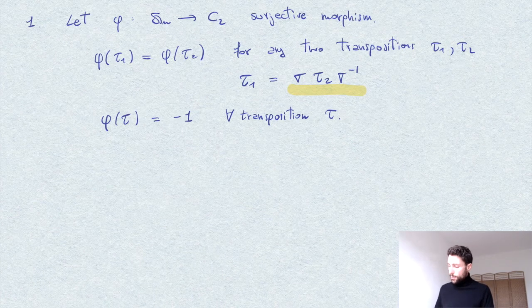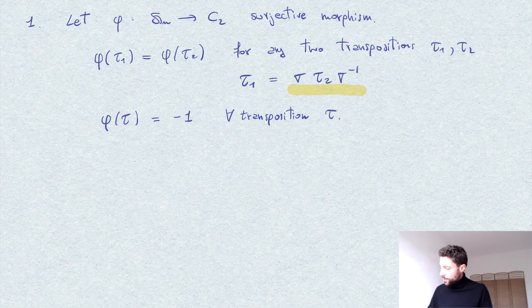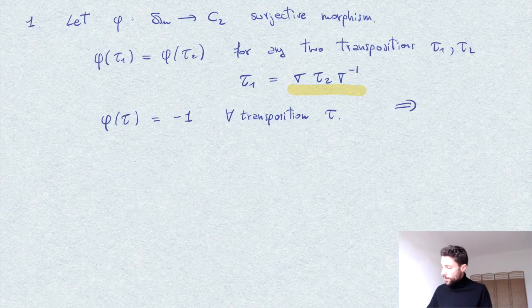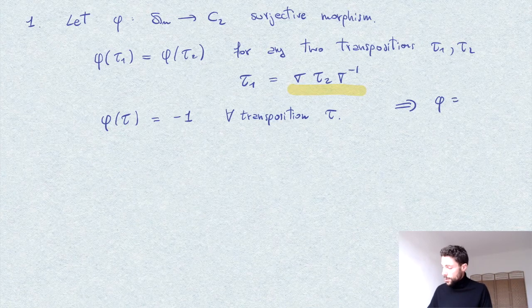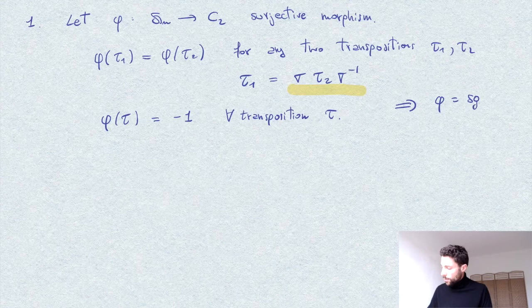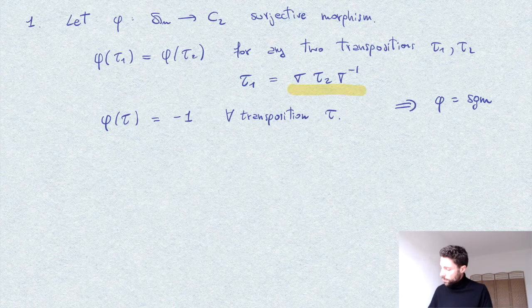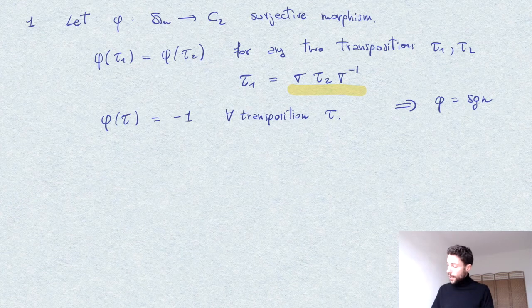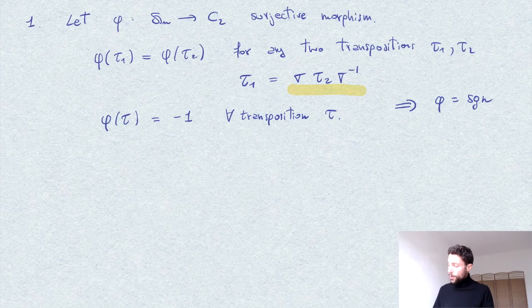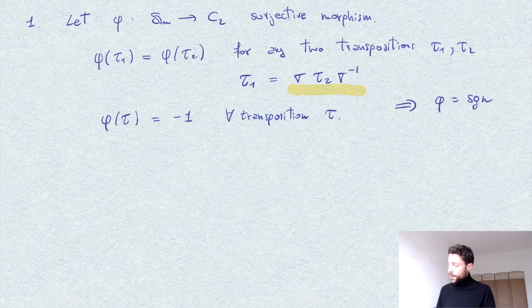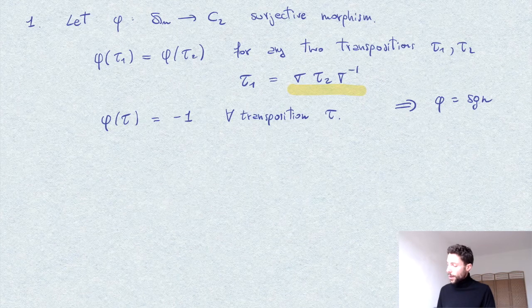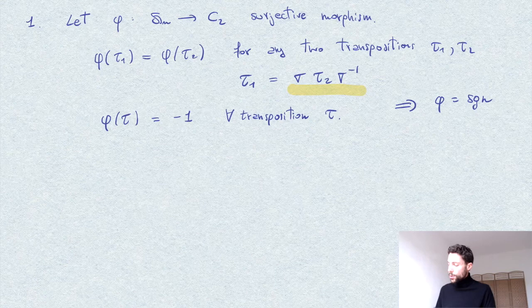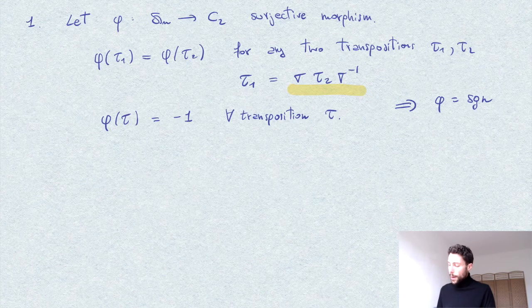Well, this precisely shows we conclude that phi is just the sign, or phi is precisely, because there are no other choices since the value of phi on any other permutation will be determined by how phi acts on transpositions.